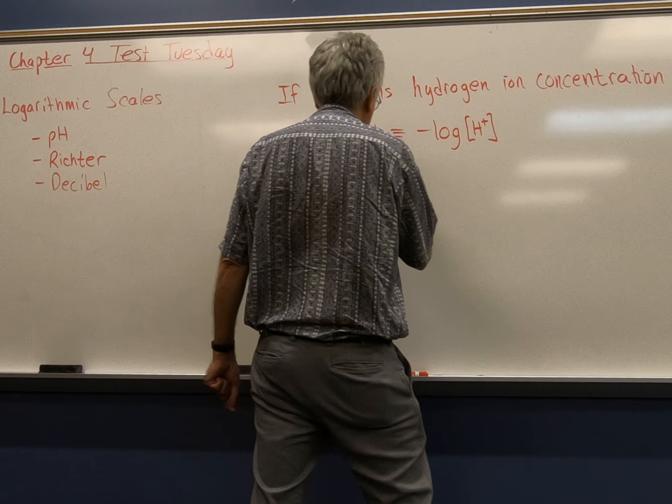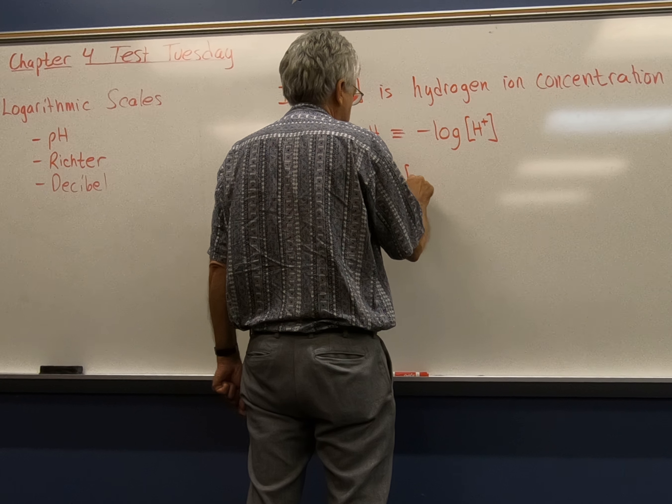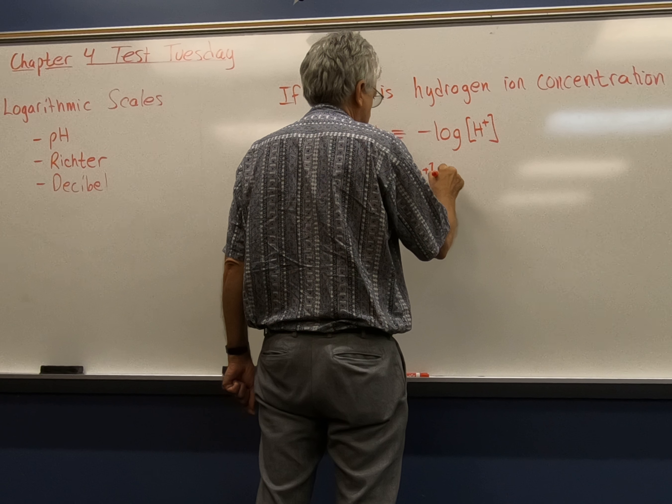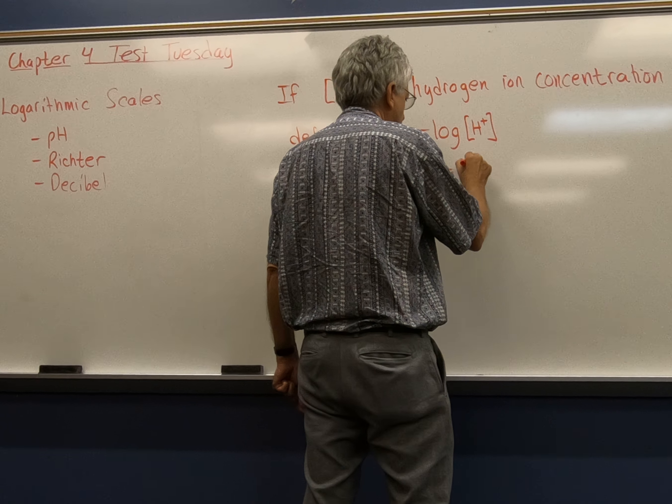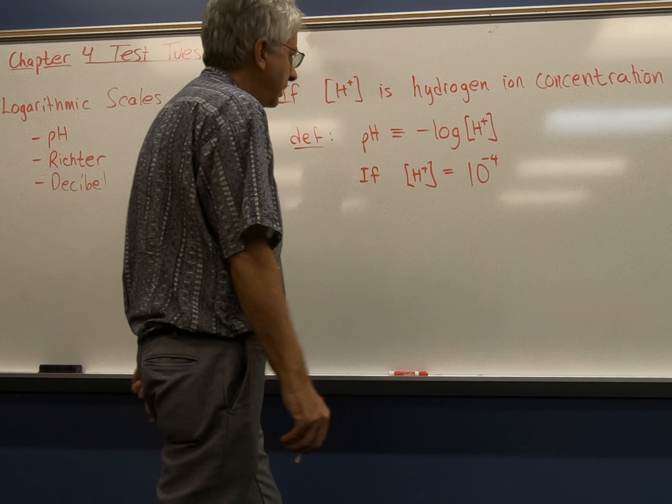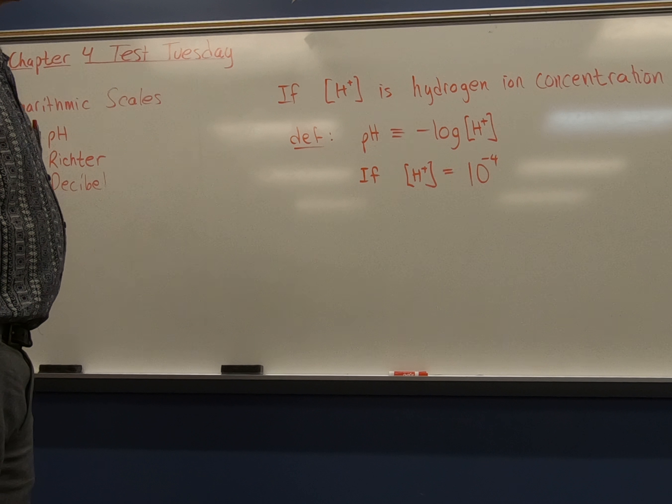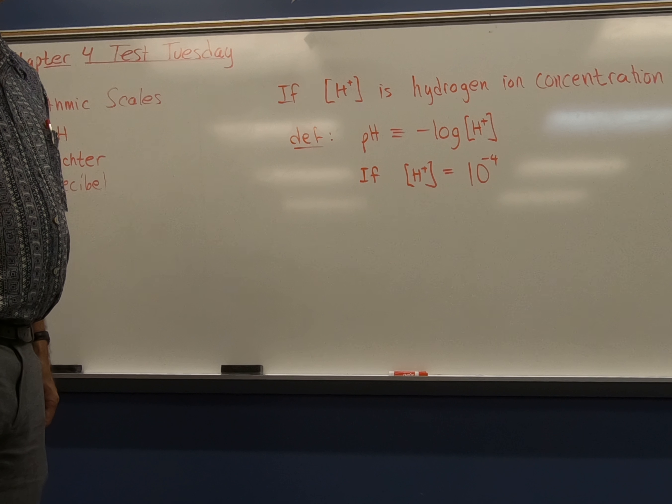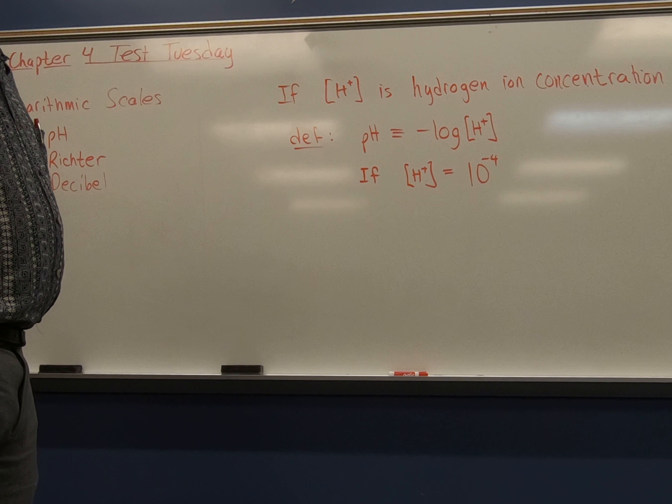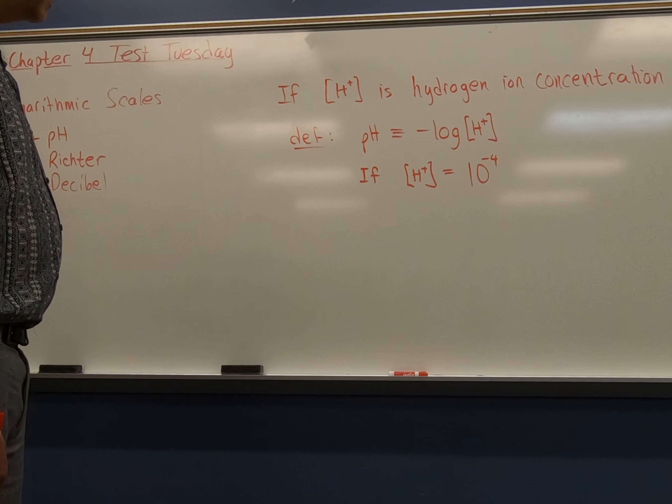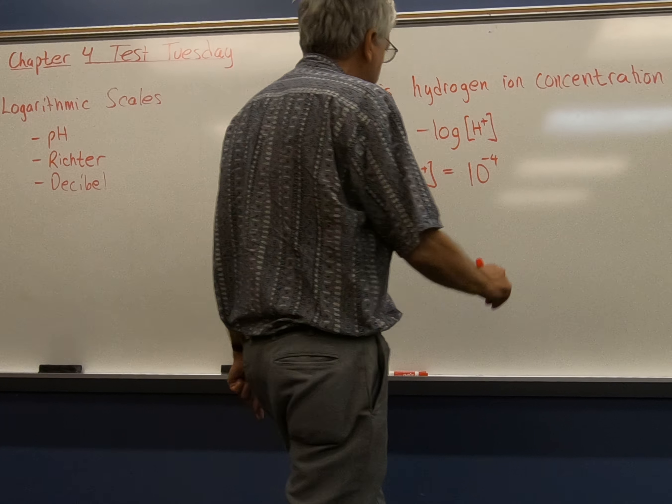So, if the hydrogen ion concentration is equal to 10 to the negative fourth, what does that mean? That would mean like one in every 10,000 molecules is a hydrogen ion?